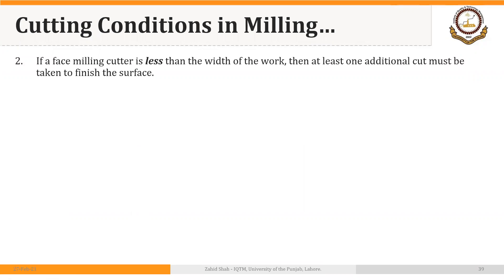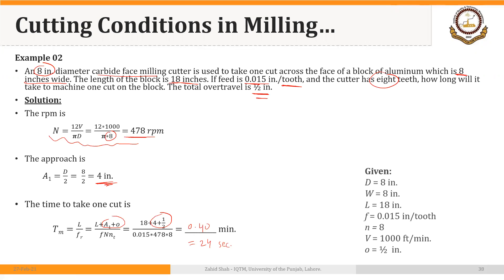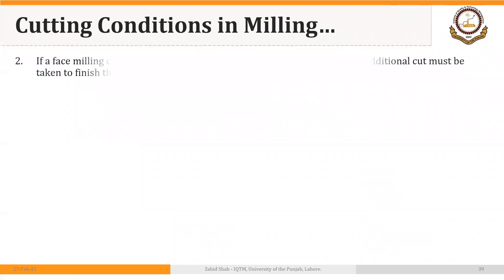If a face milling cutter is less than the width of the work, then at least one additional cut must be taken to finish the surface. For example, if the cutter were 4 inches instead of 8 inches, we would need 2 cuts to machine the part. Whatever time is calculated using the 4-inch diameter cutter, we multiply by 2 to get the minimum theoretical machining time.